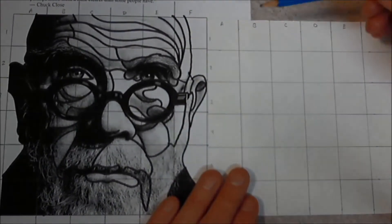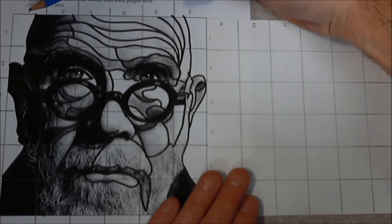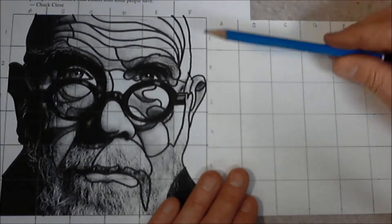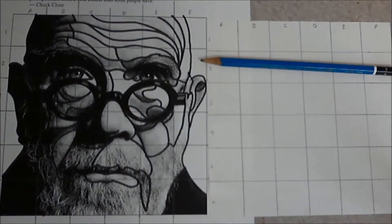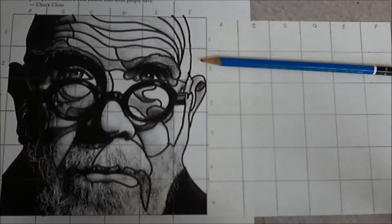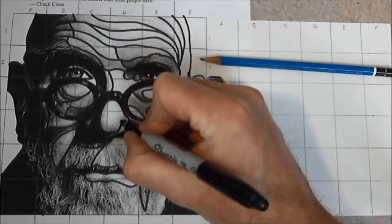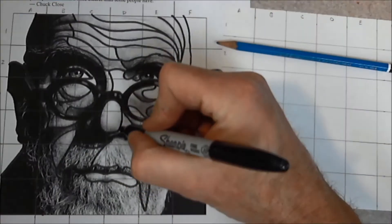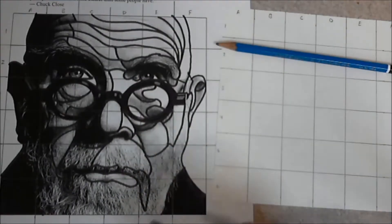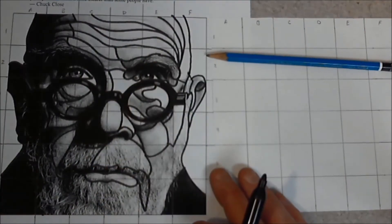So what I'm going to do right now is I'm going to look at what's happening in square 1A. And actually, before I do this, I would take something like a Sharpie marker, and it doesn't have to be a Sharpie, they're not paying me anything for my time here, but a black felt-tipped pen, and I can outline some of these larger shapes.